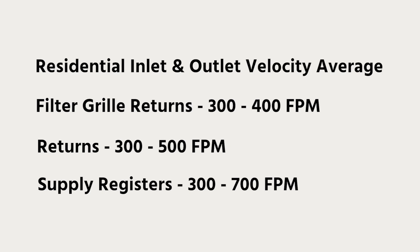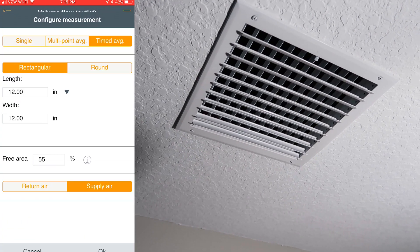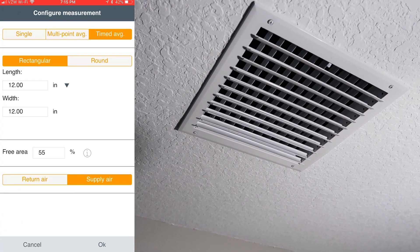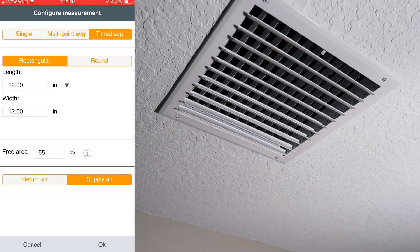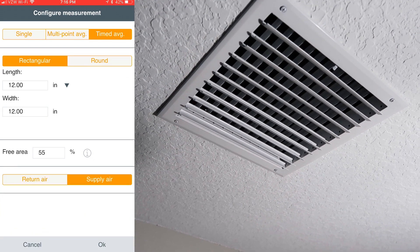In general, in a residential air conditioning supply duct, we want to see velocities anywhere from 300 feet per minute to about 700 feet per minute. I've intentionally set really low velocities for the purpose of having low air noise. I'm going to be doing a timed average traverse. You can see I've got it already set in a 12-inch by 12-inch, 55% free area — that is off the specs for this actual vent. You have to look carefully at the specifications for the vents in order to find that.